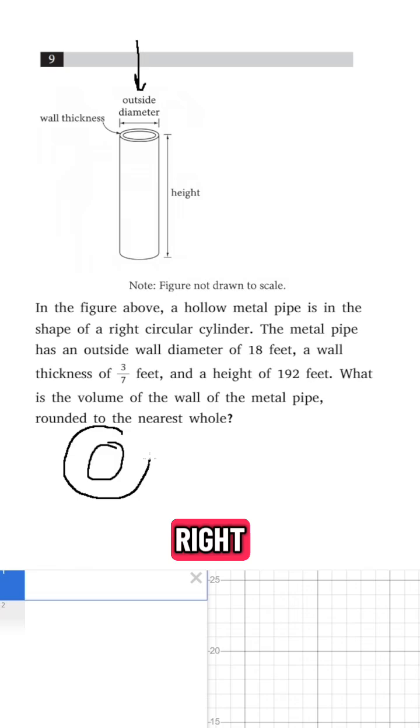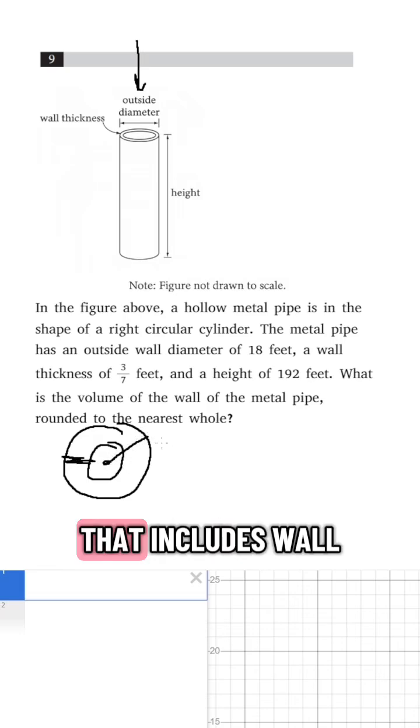This outer circle is what makes up the wall thickness, and then this radius here that includes the wall thickness would be the radius of this whole circle, aka that would be the whole base.